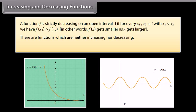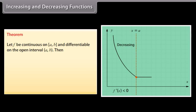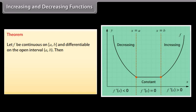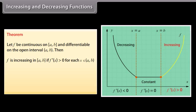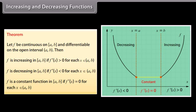An example of a function that is neither increasing nor decreasing is y equals cos x. Theorem: Let f be continuous on a closed interval a comma b and differentiable on the open interval a comma b. Then f is increasing on the closed interval if f dash of x is greater than 0 for all x in the open interval; f is decreasing if f dash of x is less than 0; and f is a constant function if f dash of x equals 0 for each x in the open interval.